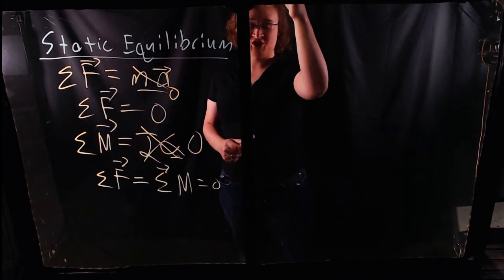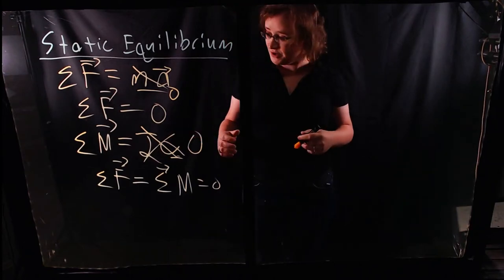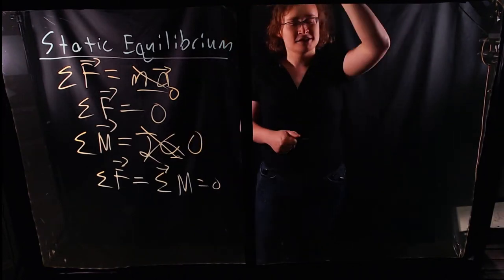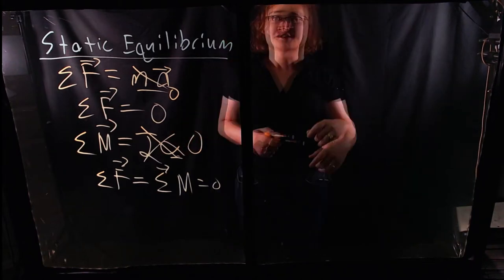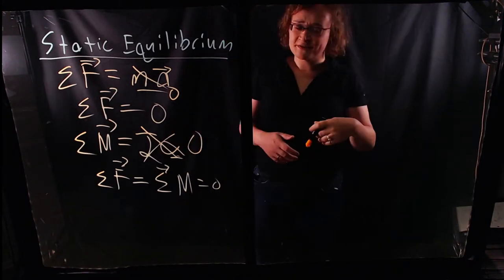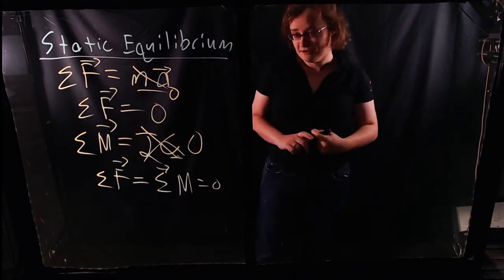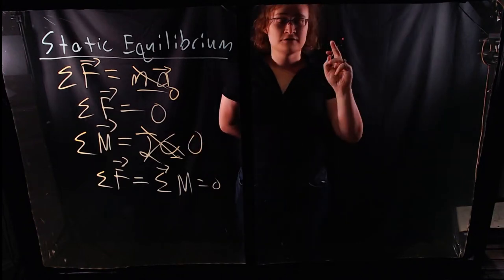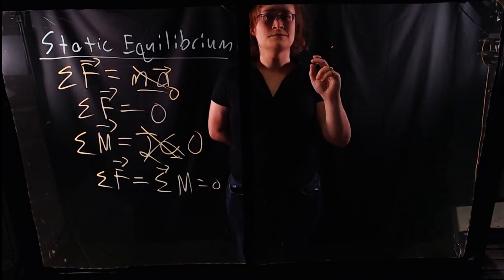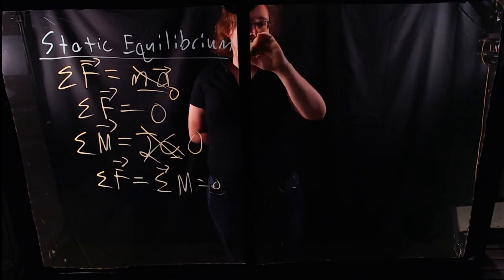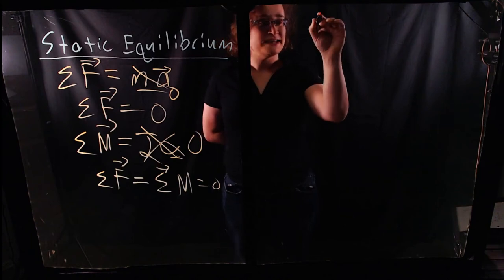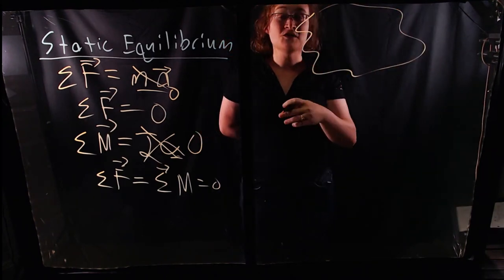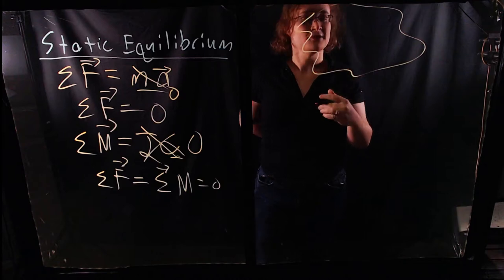That's more a physics question than an engineering question. Of course, we could get into the fact that nothing on the Earth's surface can ever truly be stationary — the Earth itself is moving, rotating, the Sun is moving — but anyway, that's neither here nor there. So for static equilibrium, what is important for an object to be in static equilibrium? Let's break this down and look at it from the point of view of rectangular coordinates.